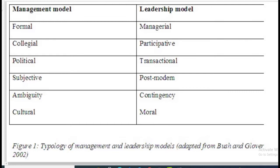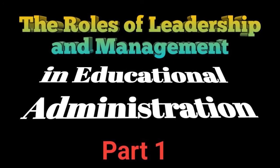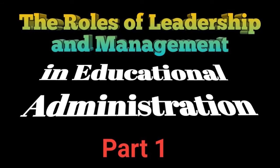Formal Models. Formal model is an umbrella term used to embrace a number of similar but not identical approaches. The title 'formal' is used because these theories emphasize the official and structural elements of organizations. Formal models assume that organizations are hierarchical systems in which managers use rational means to pursue agreed goals. Heads possess authority legitimized by their formal positions within the organization and are accountable to sponsoring bodies for the activities of their organization — Bush, 2003, p. 37.